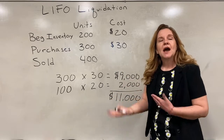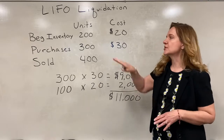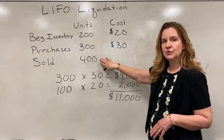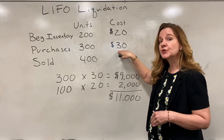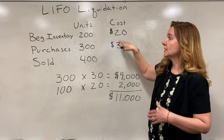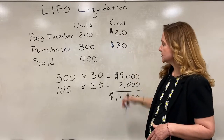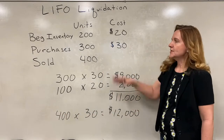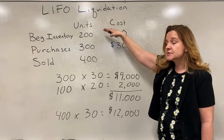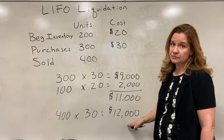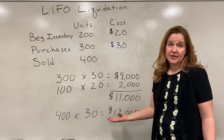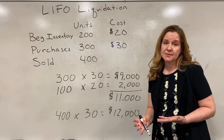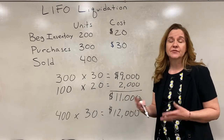The first thing we want to do is recalculate COGS using only the newer costs. We take all 400 units and calculate at $30, so 400 times $30 equals $12,000. You can see that if we didn't have to go up to the older items, we would have a higher cost of goods sold. The difference between the two is $1,000. This just has to be disclosed in the financial statements — no journal entry is required, just a disclosure.